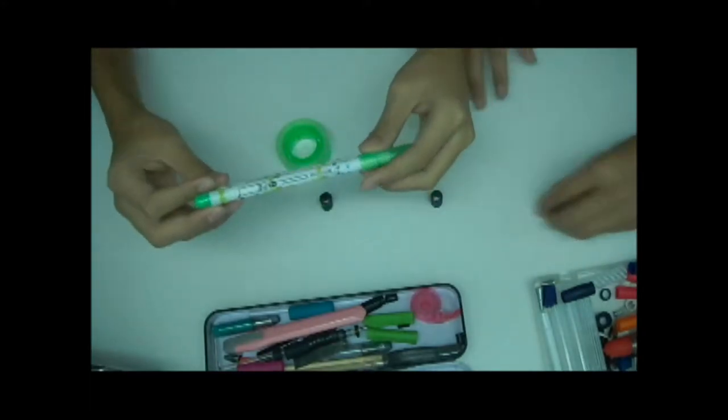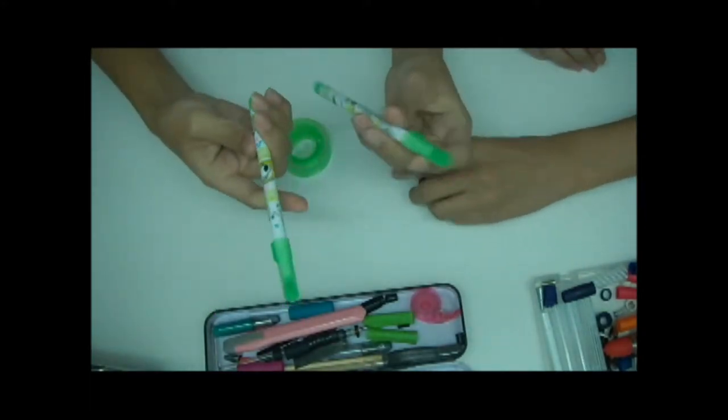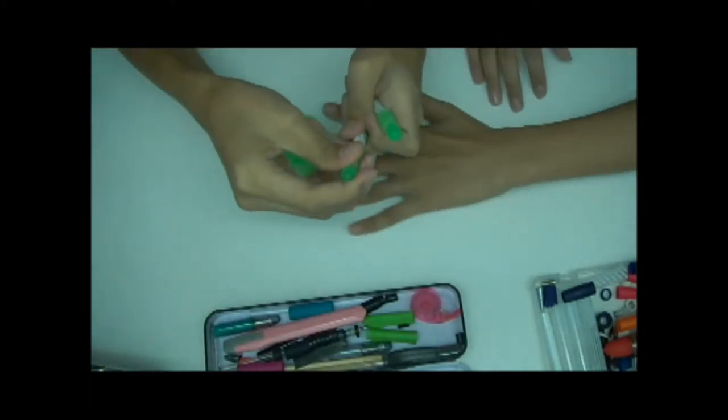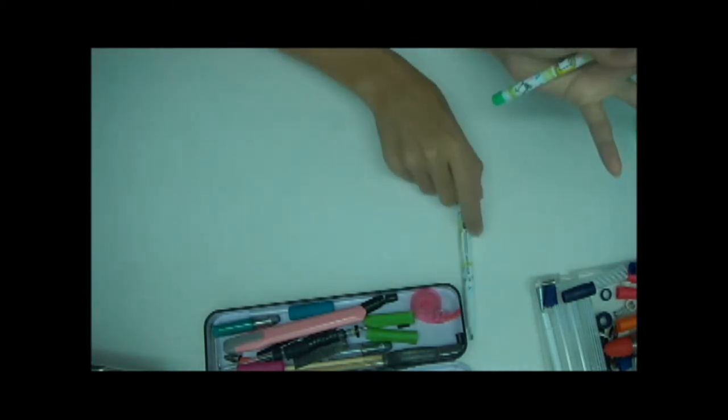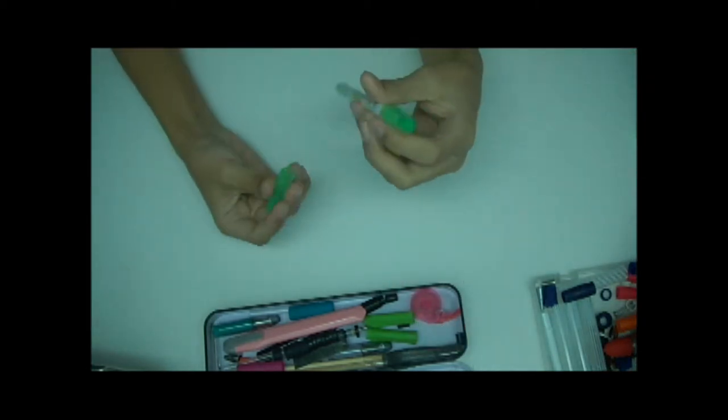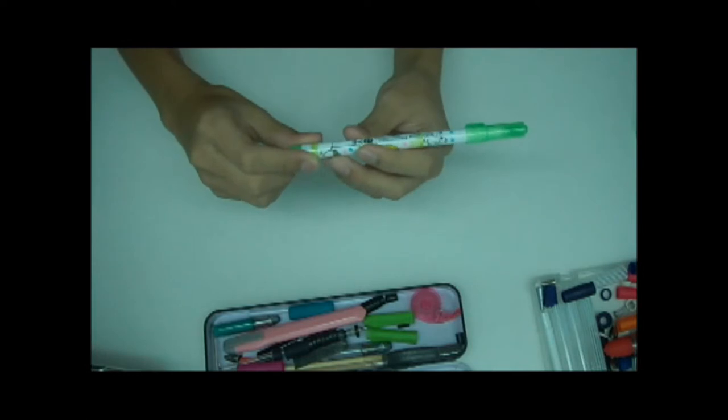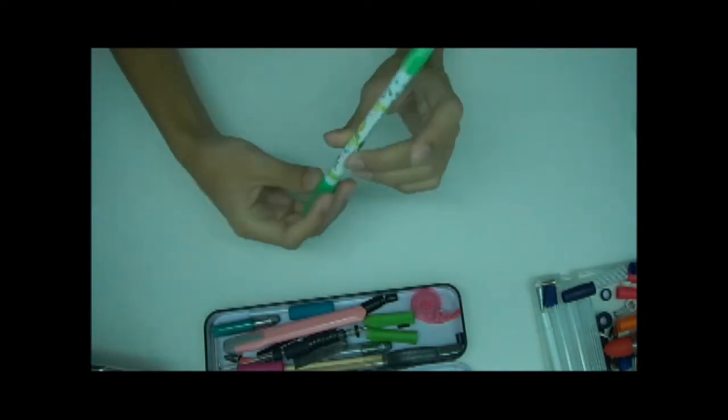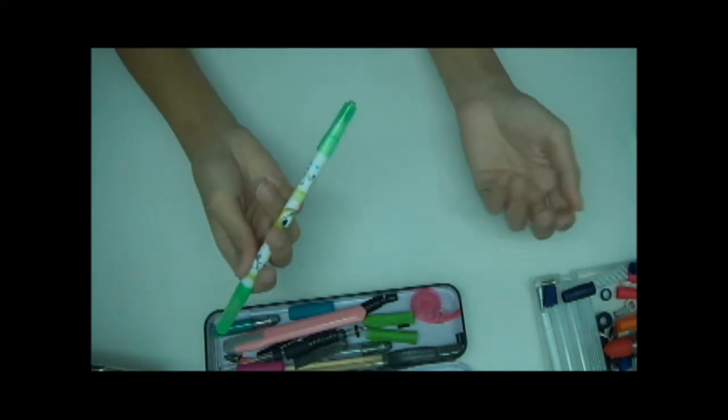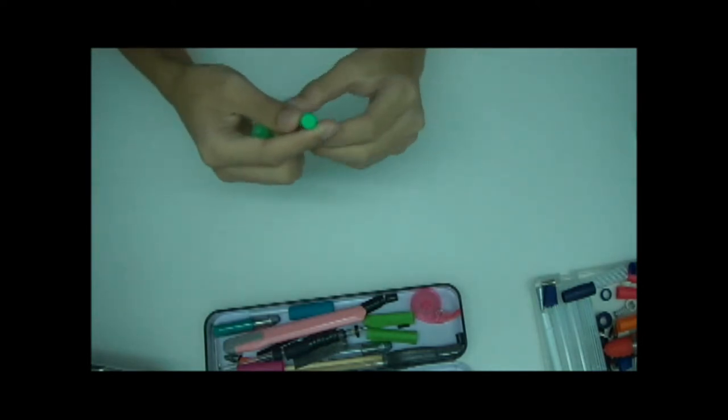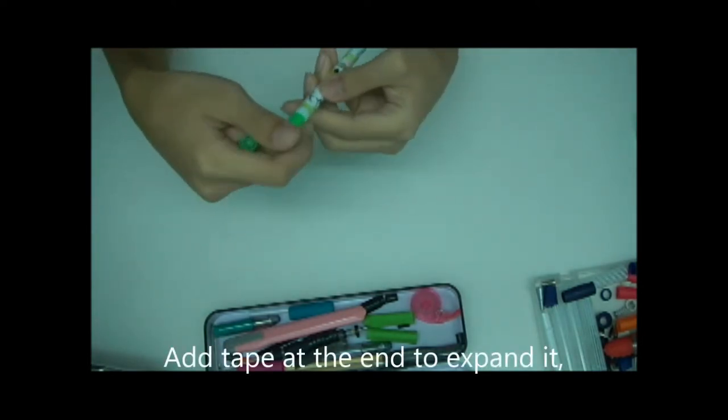So basically, at first, get two of these and then remove a cap from one of these and say goodbye to one of the bodies. The next thing you would do is to just put this behind. That's all, and here you have a Commsar.